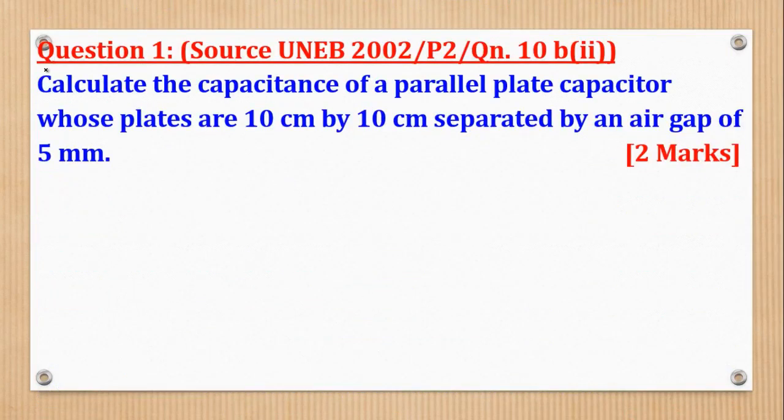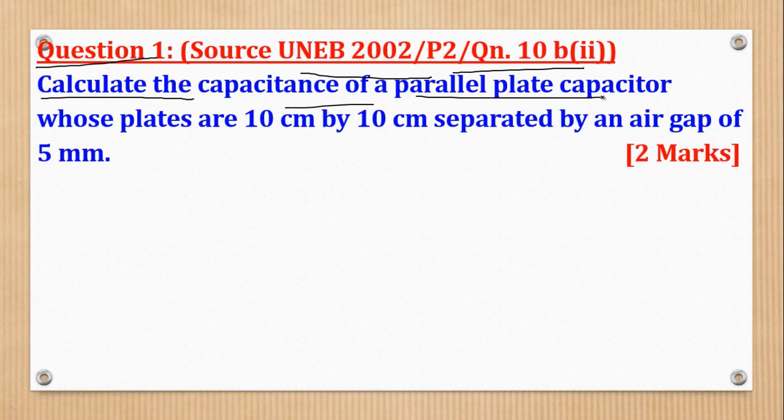So in order to remember the formula, we need to go through a number of questions. So question 1 came from UNEB 2002, paper 2, question 10b, roman 1, and says, Calculate the capacitance of a parallel plate capacitor, whose plates are 10cm by 10cm, separated by an air gap. Now, air gap means the permittivity is free space of 5mm. So 5mm is D.